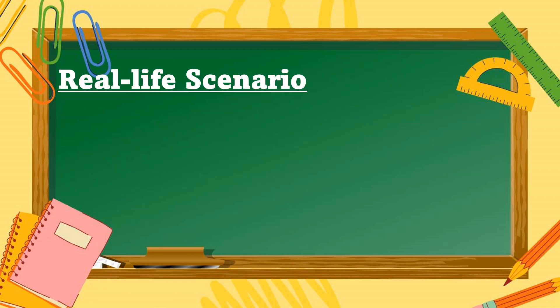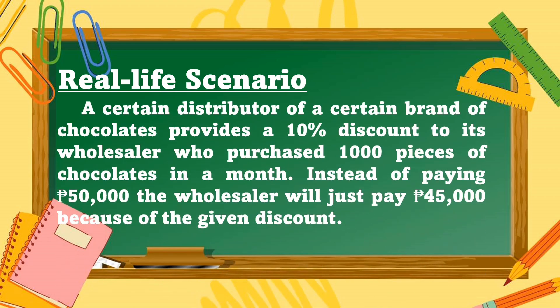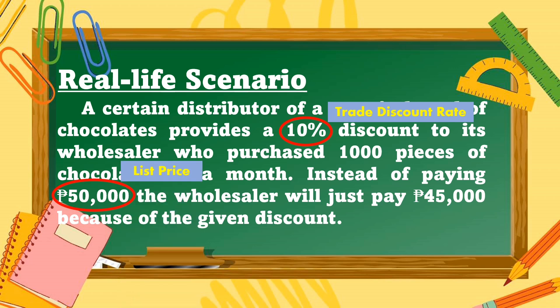Let us apply to a real-life scenario. A certain distributor of a certain brand of chocolates provides a 10% discount to its wholesaler who purchased 1,000 pieces of chocolates in a month. Instead of paying 50,000 pesos, the wholesaler will just pay 45,000 pesos because of the given discount. From this scenario, 10% is the trade discount rate, 50,000 pesos is the list price, and 45,000 pesos is the net price.